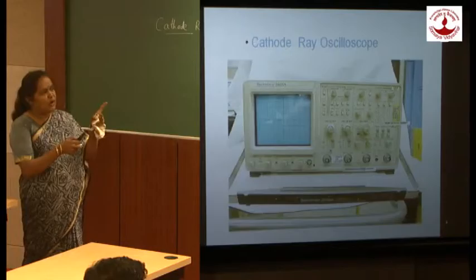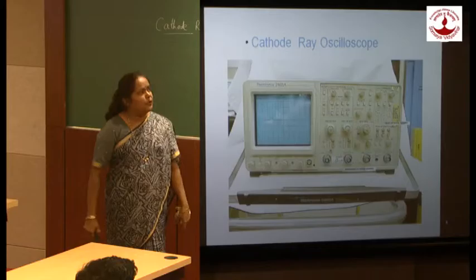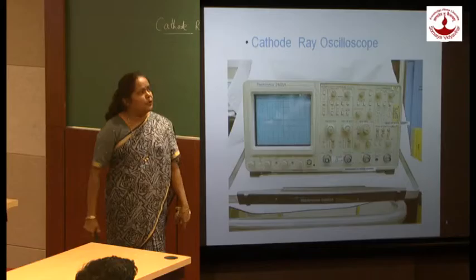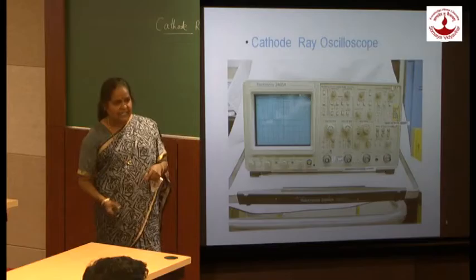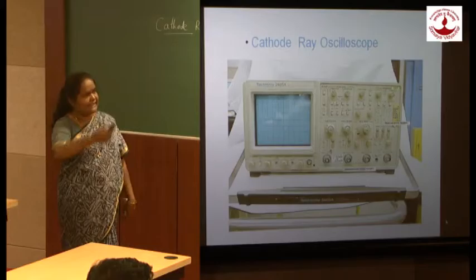Now, how does this CRO work? This box has so many terminals, and it is surprising to know what these terminals do. That is why we have to study the CRO in detail, so that you can find out the function of each and every part. When we are changing the controls, how is it possible to visualize the waveform with the help of the CRO? You can study that in the detailed theory of the cathode ray oscilloscope.